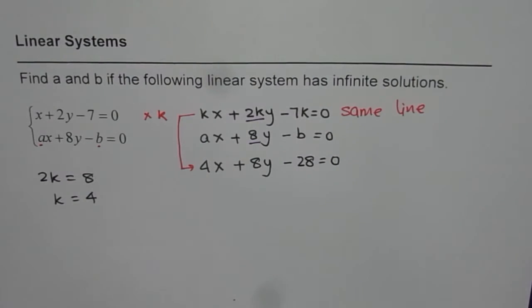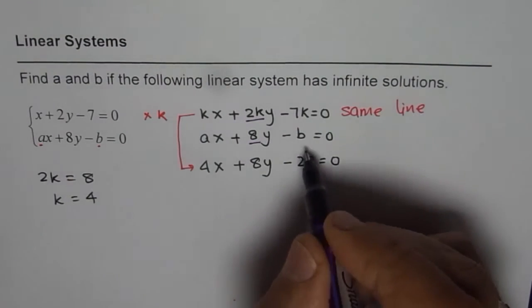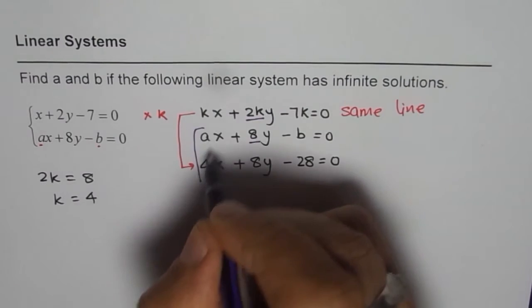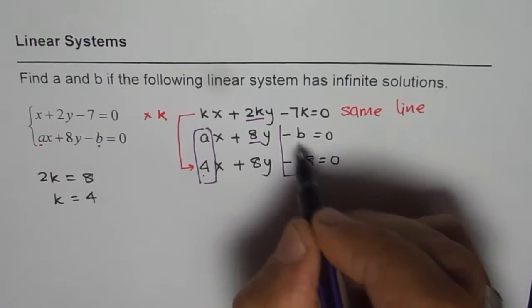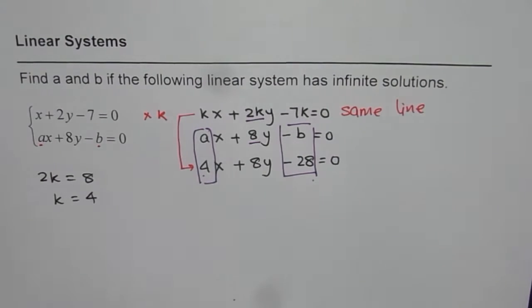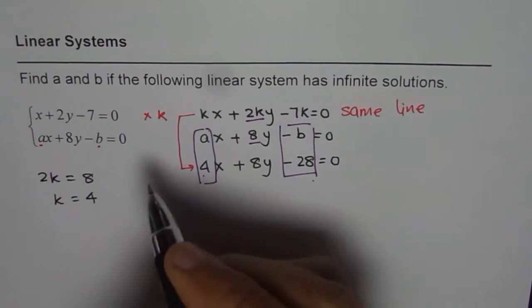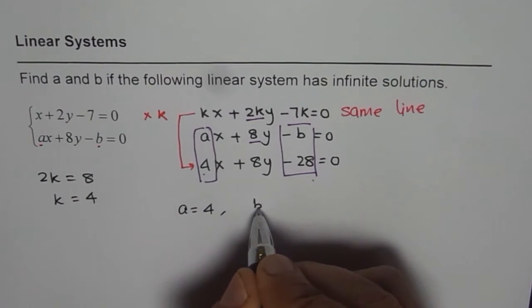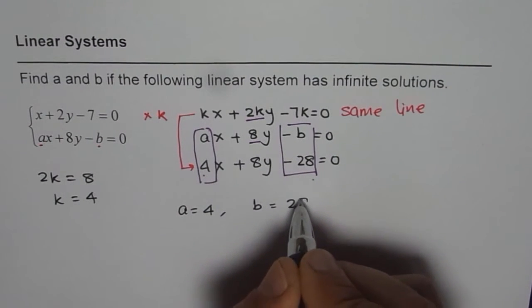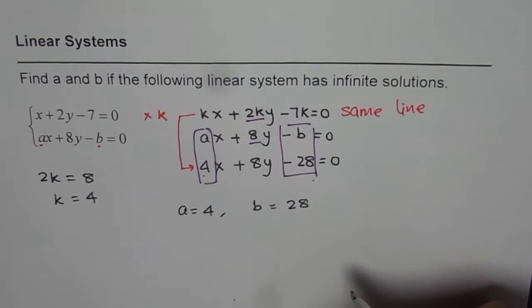Now it's clear what A and B should be. A should be equal to 4, and B should be equal to 28. Minus B is minus 28, so we get our answer: A = 4 and B = 28. That's how you can solve and find the values of A and B. I hope that's clear. Thank you and all the best.